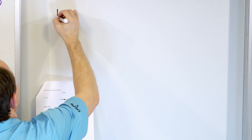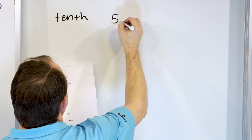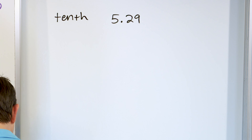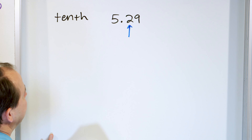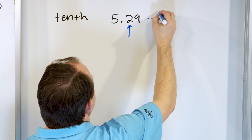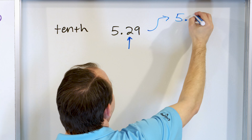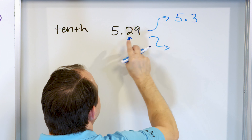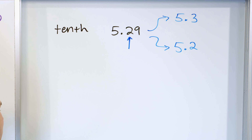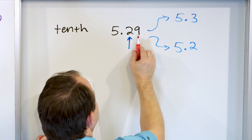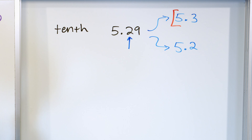We're rounding five point two nine to the nearest tenth. The tenths position is right beyond the decimal. We round up to five point three or round down and stay at five point two. We look next door and have a nine, which is larger than five, so we round up to five point three.